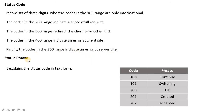Next is the status phrase, which is a small text that accompanies the status code. For example, in the 100 case the phrase is 'Continue'; 101 is 'Switching Protocols'; 200 is 'OK'; 201 is 'Created'; and 202 is 'Accepted.' There are many status codes and phrases. You should know the status code ranges and their corresponding phrases, but you don't need to memorize every detail.